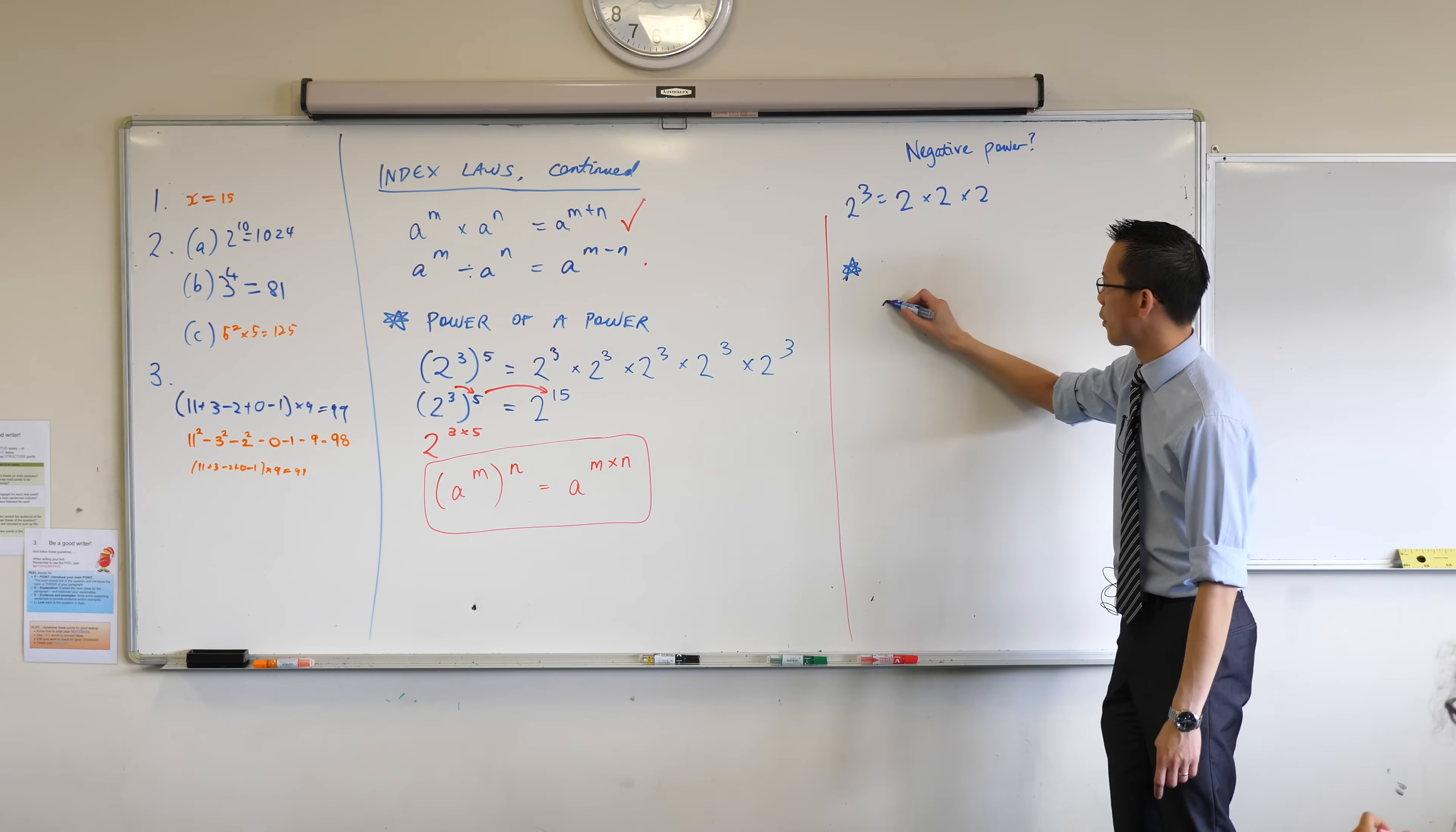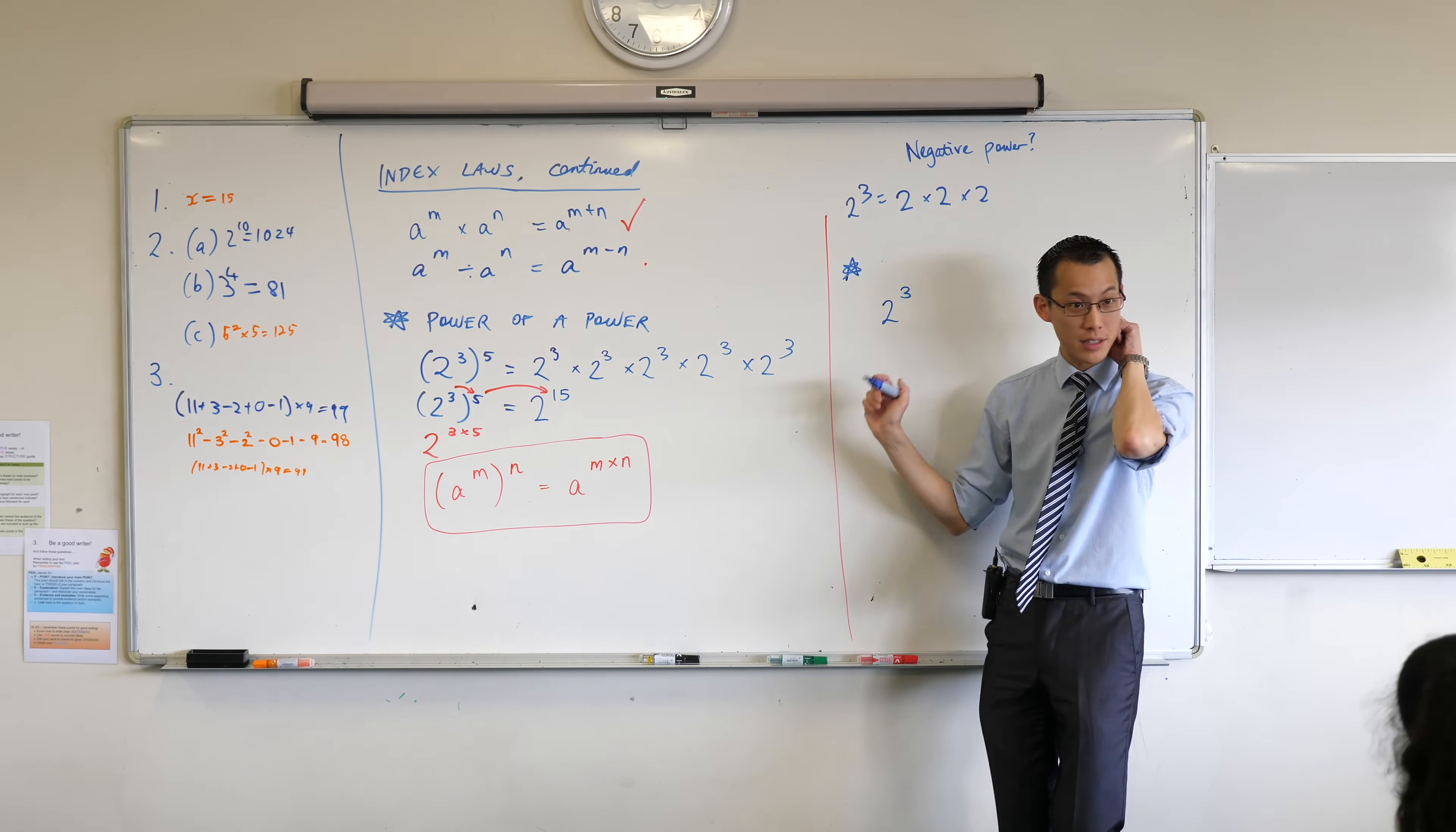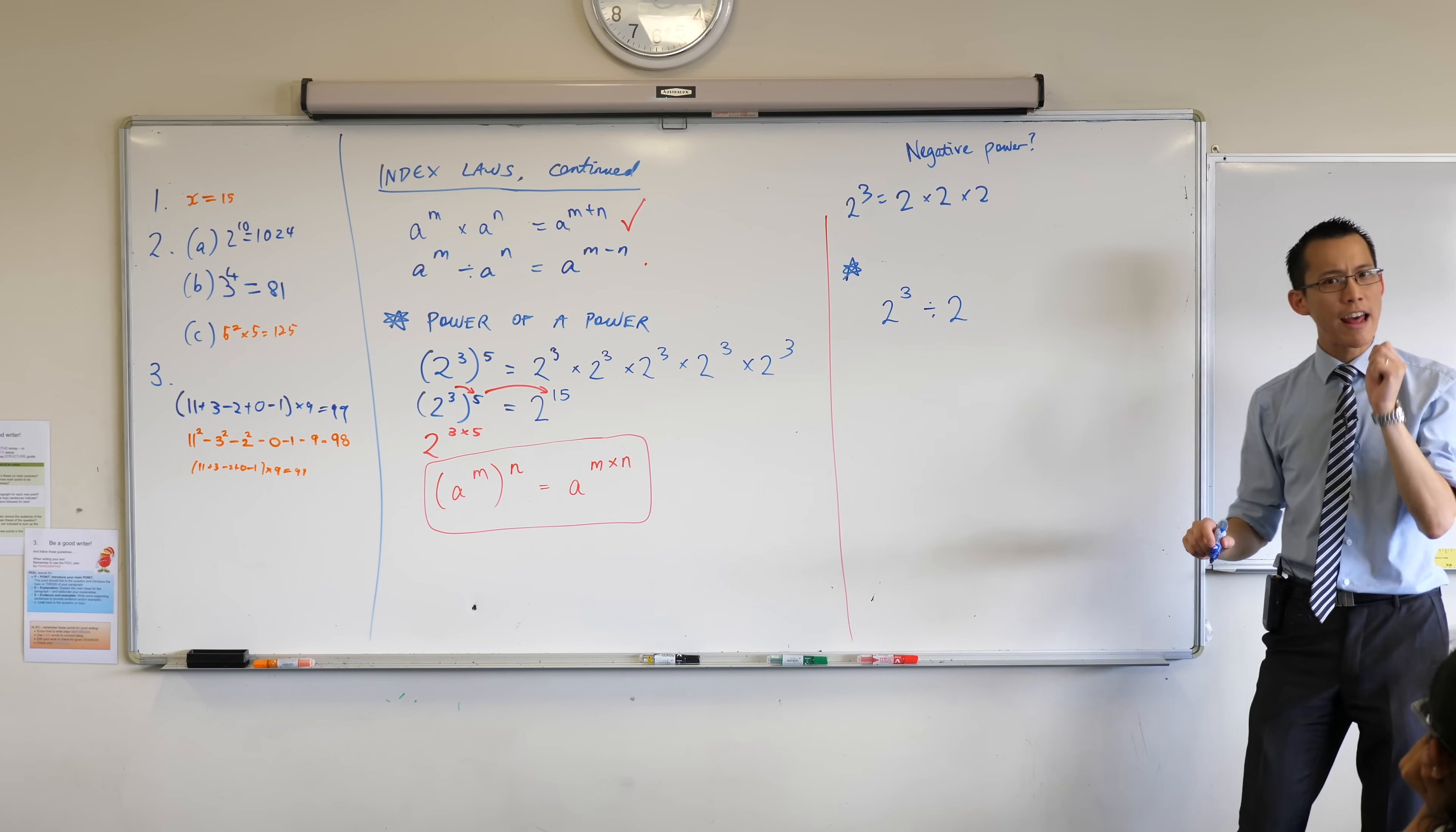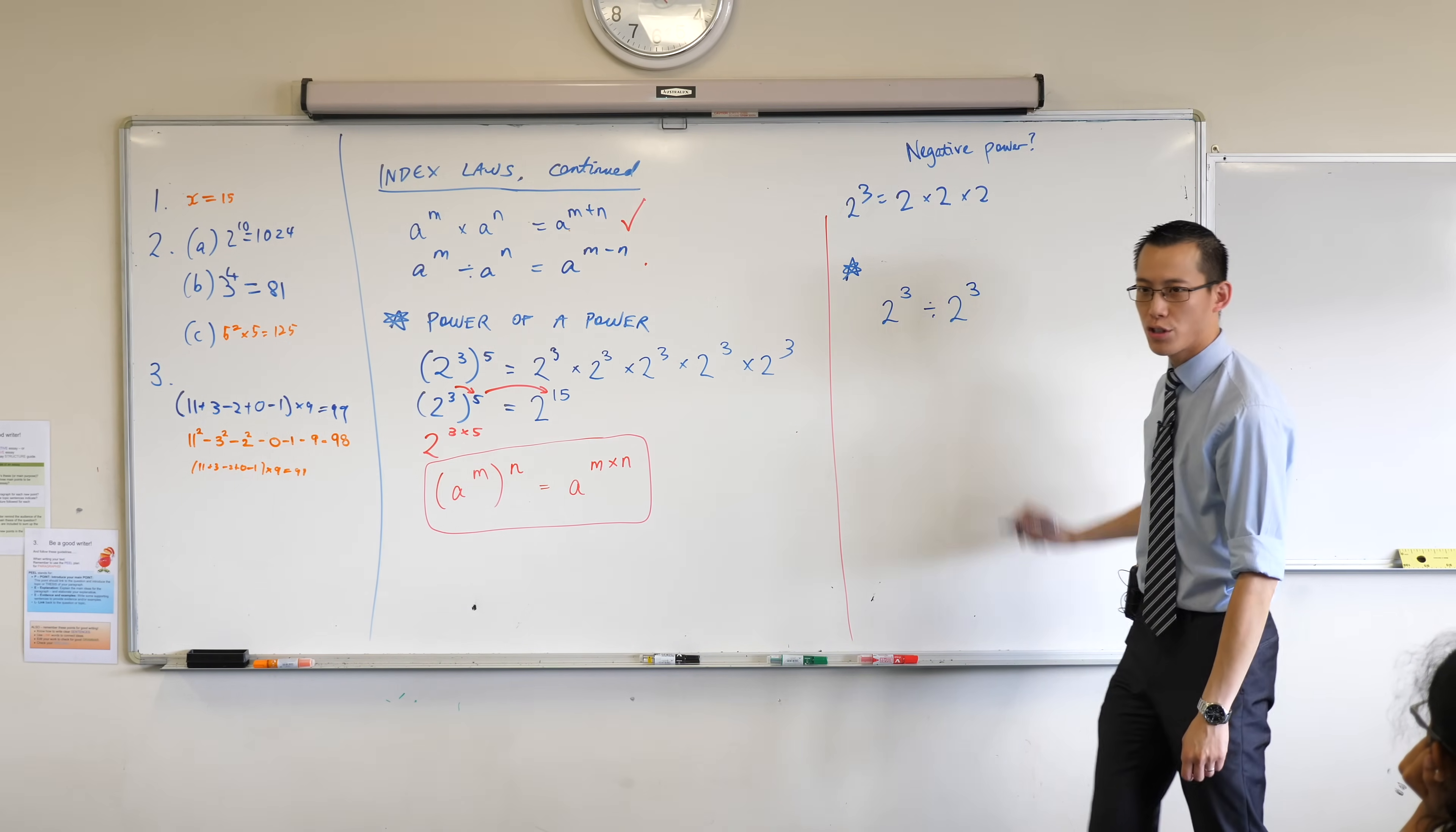We're looking at 2 cubed, weren't we? 2 cubed. This is what happens. We know what happens when you multiply stuff. What happens when you divide? I want to know, for example, what happens if I divide 2 cubed by 2 cubed?